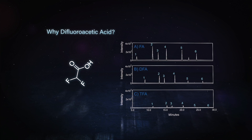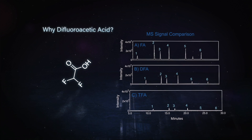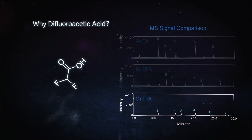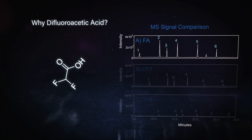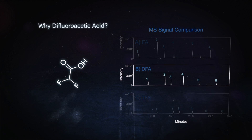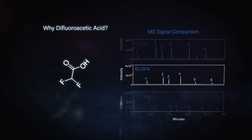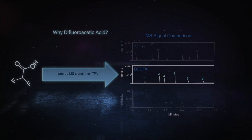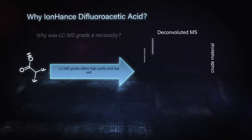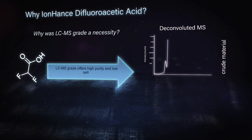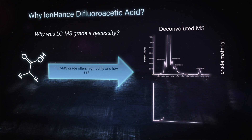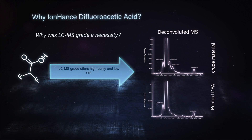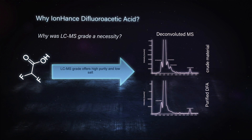Now comparing the mass spec signal of formic acid, DFA, and TFA: the TFA, as expected, shows a lot of suppression on the bottom chromatogram — it's pretty bad. If we look at formic acid at the top, we see much better signal intensity, again expected. But the DFA in the middle is looking really good — not quite as high as formic acid, but working much better than TFA. We also found that crude DFA material has a lot of different salts that complicate mass spec interpretation, so using a specially made LC-MS purified DFA gave much better results, making LC-MS grade DFA a necessity for this analysis.